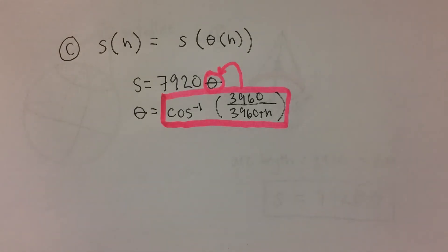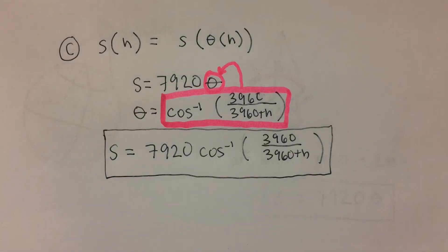When we do that, we get s equals 7,920 times the inverse cosine of 3,960 divided by the quantity 3,960 plus h. This is our equation for s as a function of h.